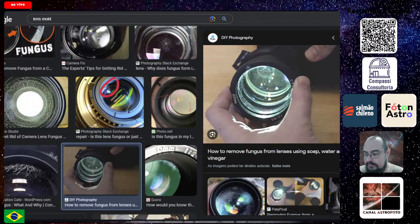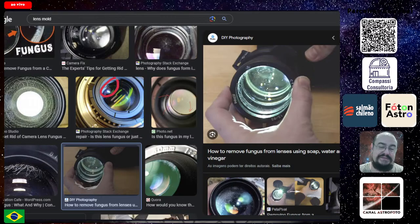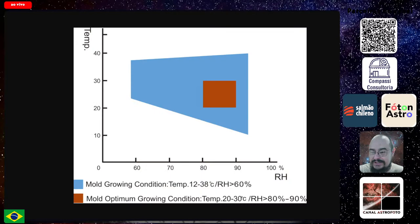Os fungos têm uma área muito específica onde eles adoram, e algumas características ambientais que eles também gostam: ar parado, escuridão, umidade e temperatura estáveis. Que é justamente o que acontece dentro de uma gaveta, dentro de um armário, dentro de um case. Justamente nesses lugares que a gente costuma guardar telescópios.